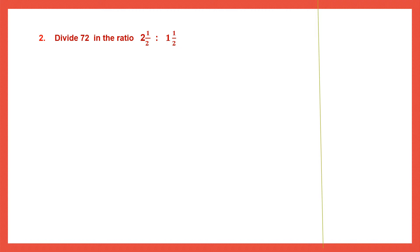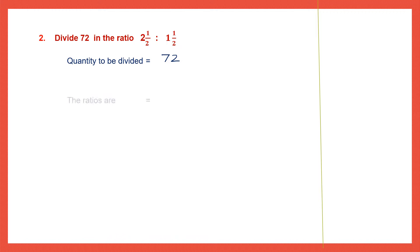Question 2. Divide 72 in the ratio 2 and 1/2 is to 1 and 1/2. The quantity to be divided is 72. The ratios are 2 and 1/2 is to 1 and 1/2.